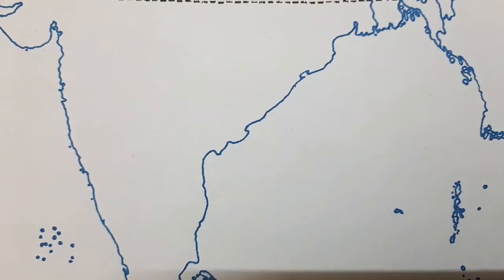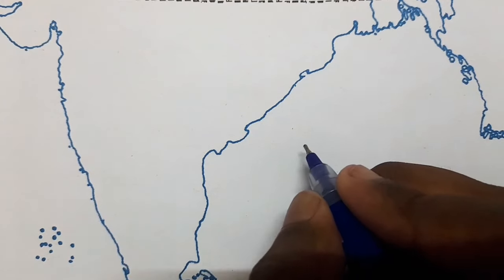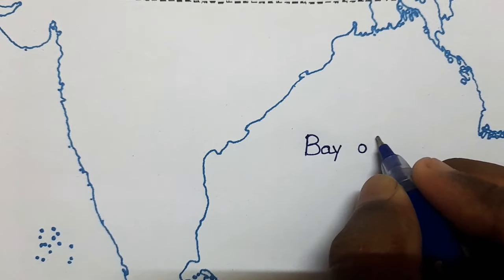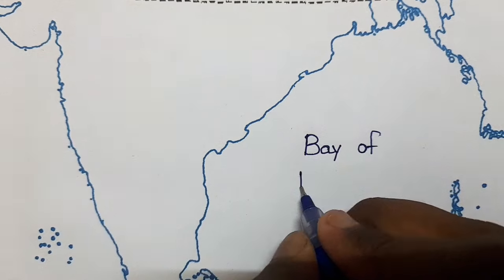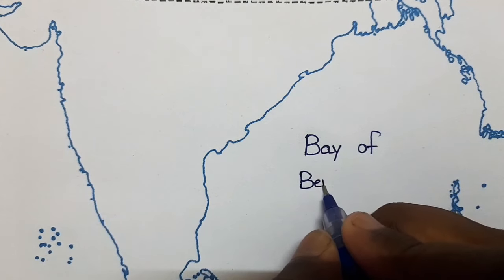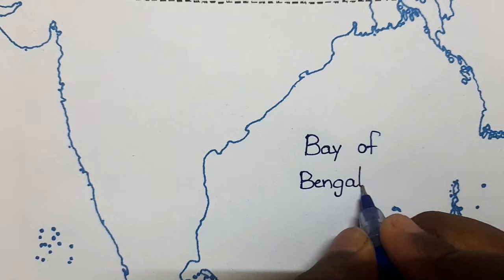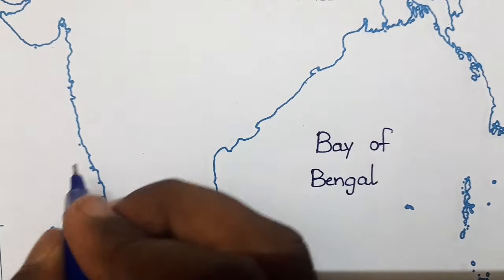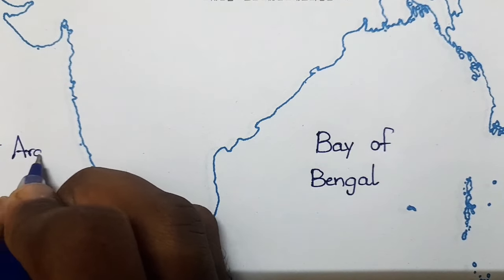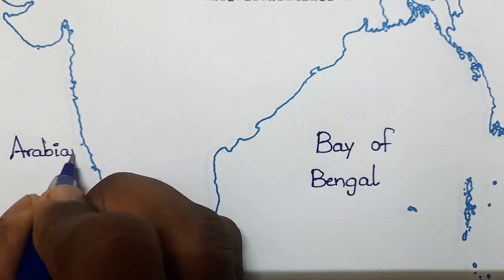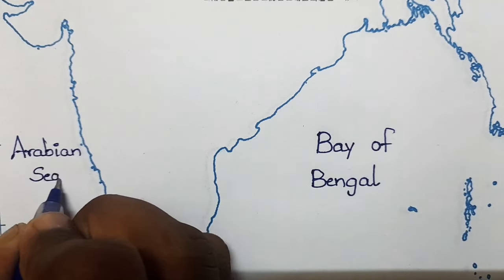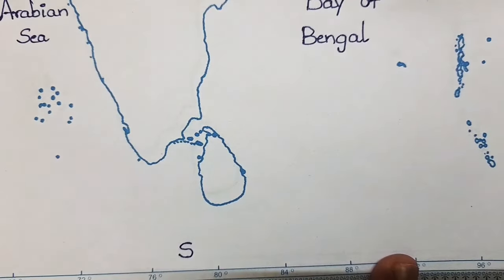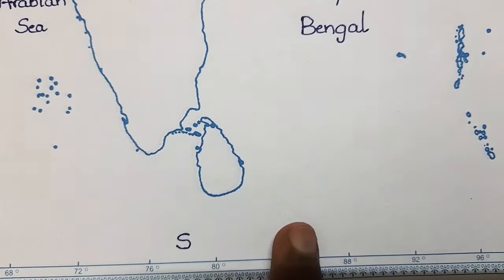Next, coming to the surrounding oceans and seas. India is a peninsular country, meaning three sides water and one side land. On the southern side of India to the right side we have the Bay of Bengal, on the southern side to the left side we have the Arabian Sea, and on the bottom side we have the Indian Ocean.